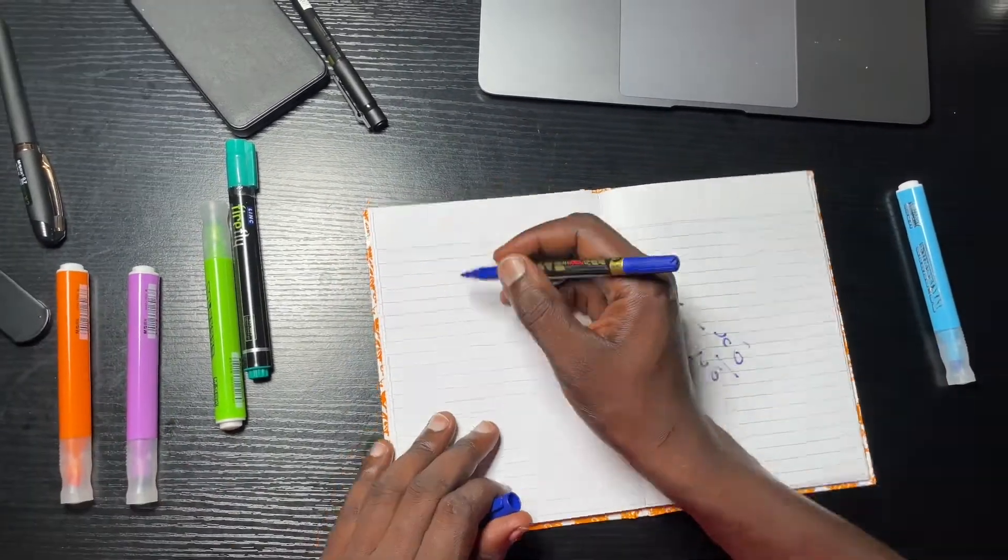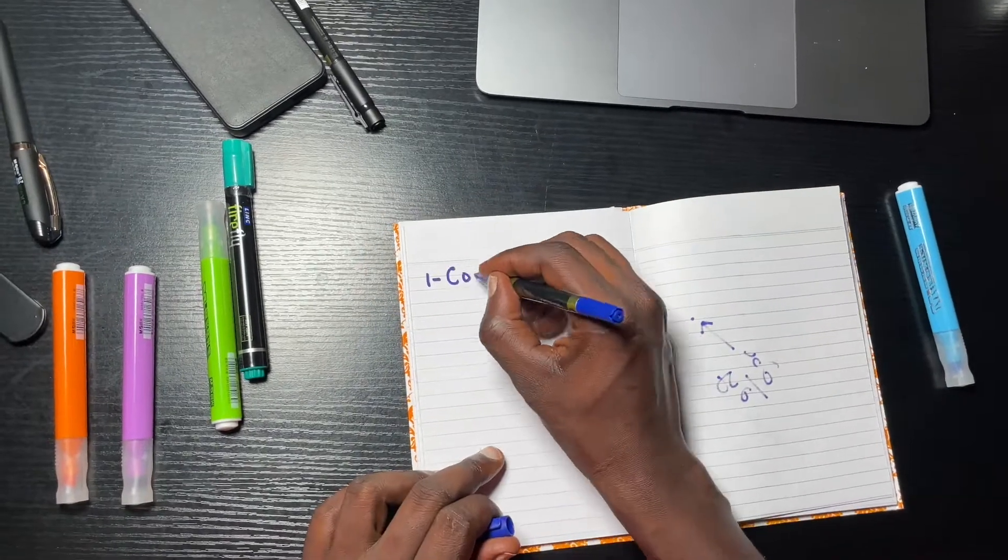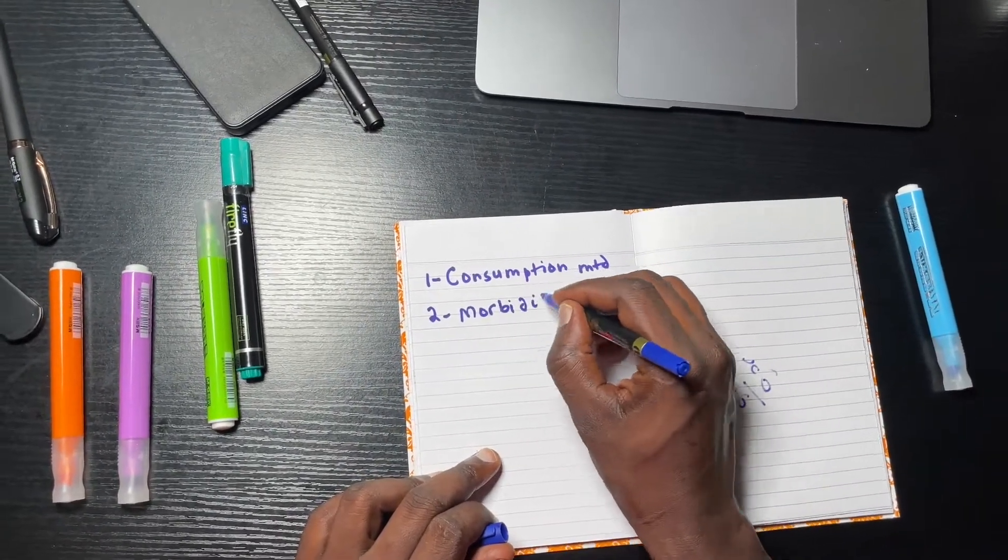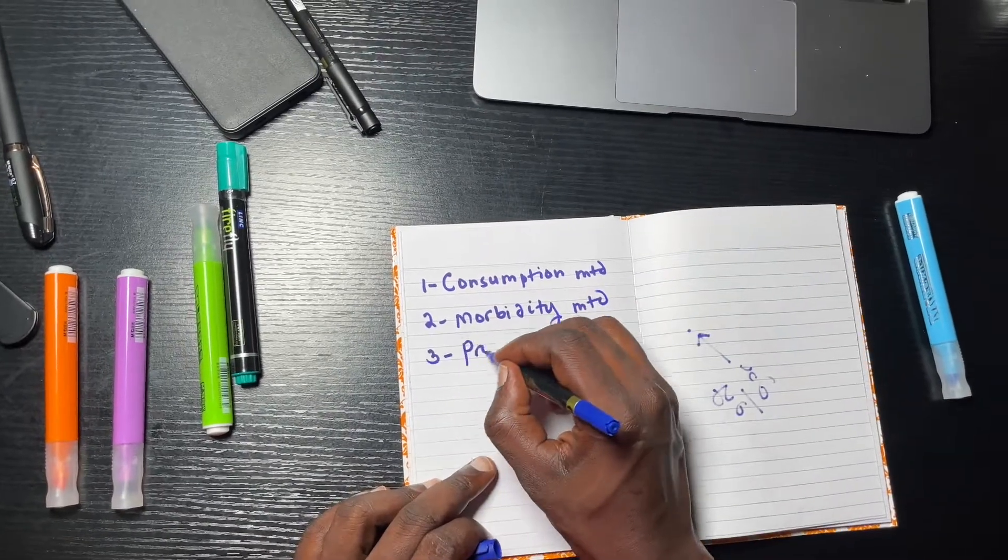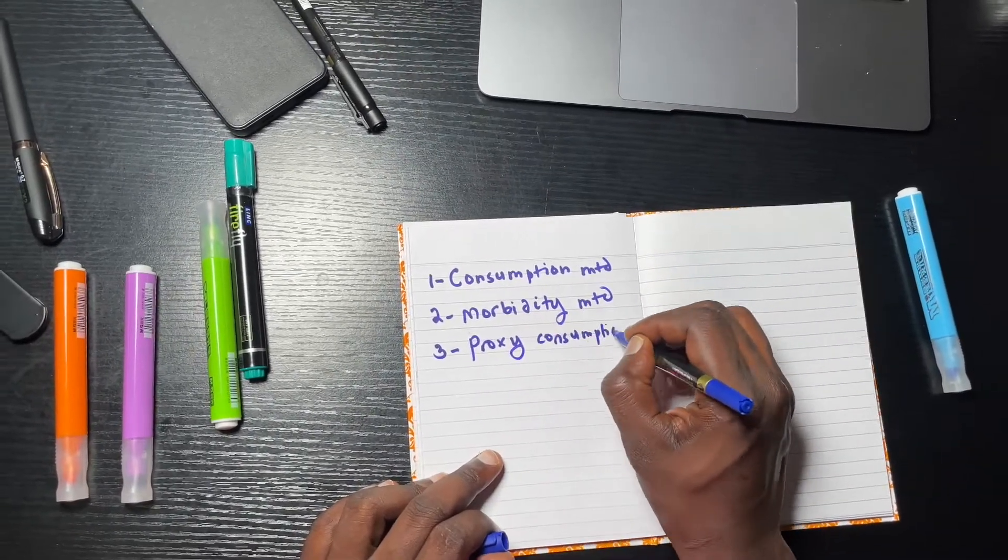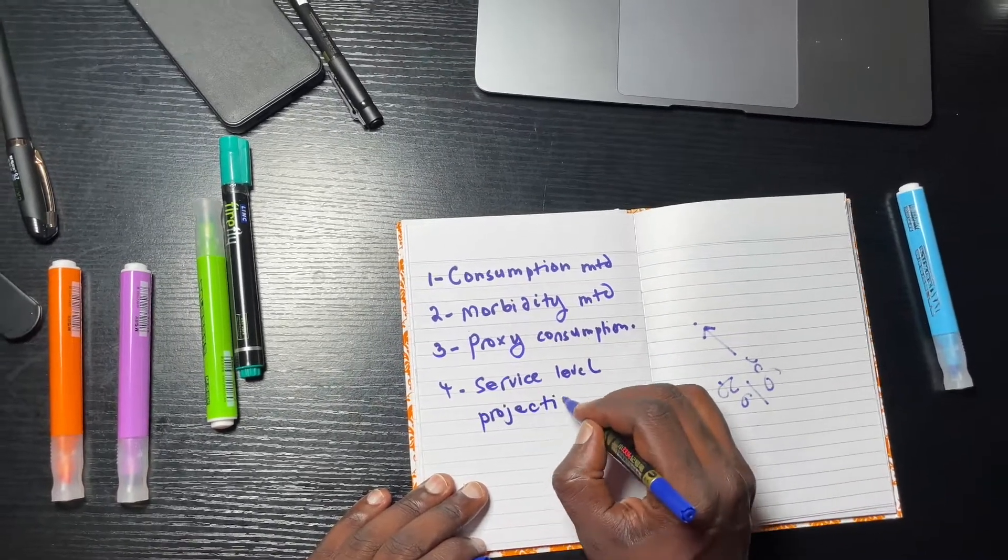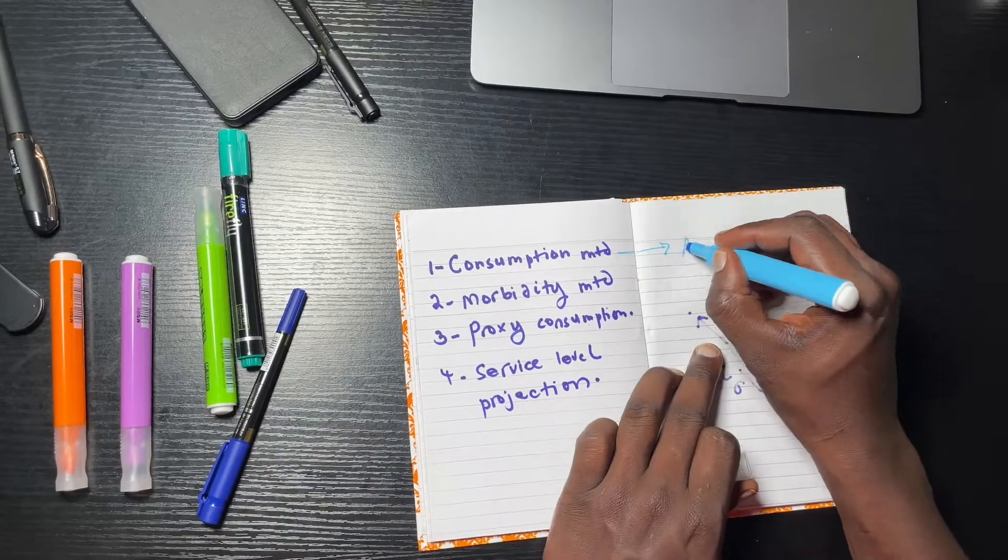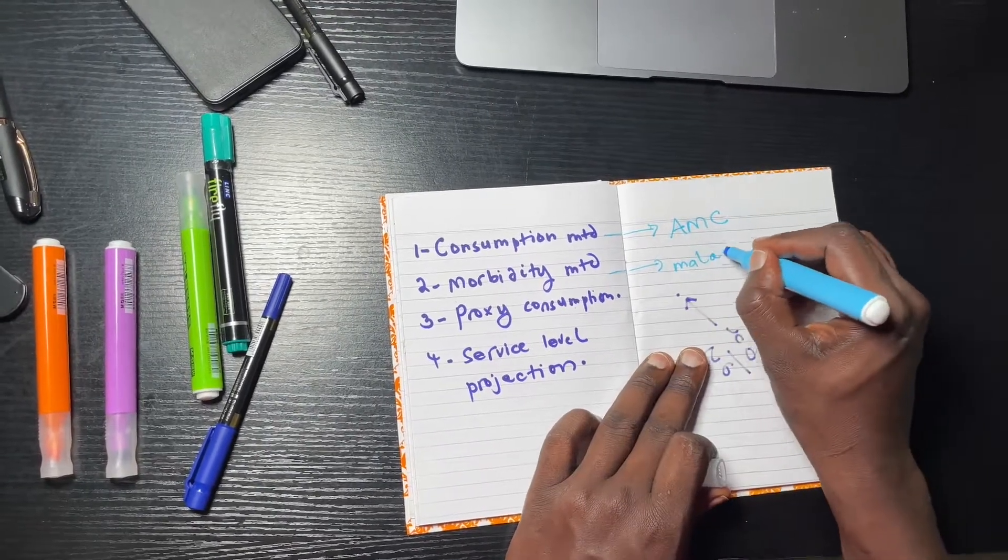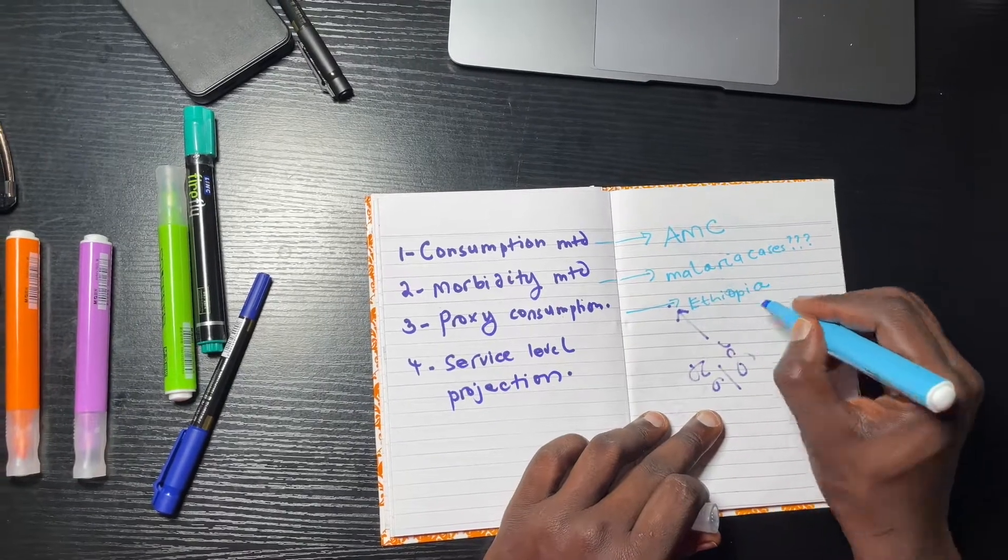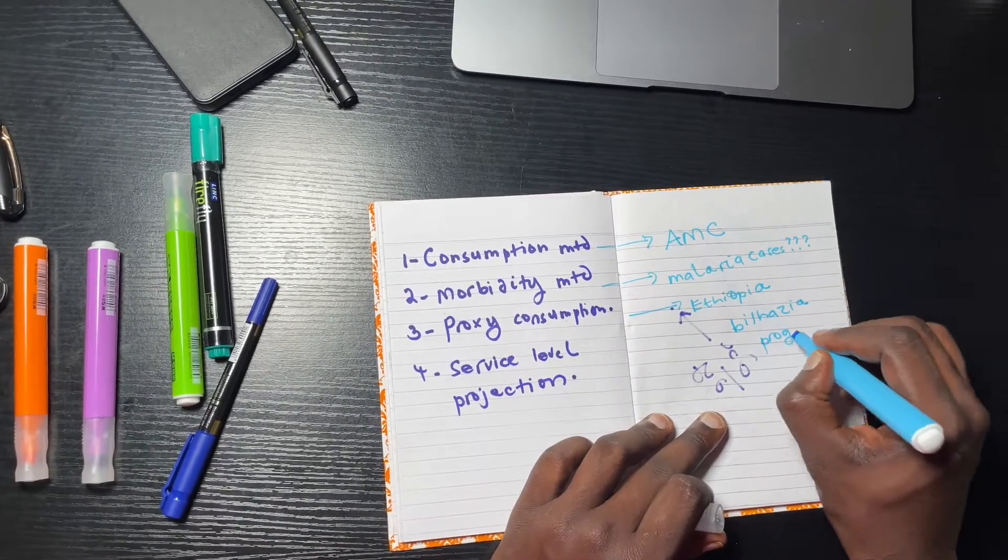The literature recognizes four methods of quantification and these include the consumption method, the morbidity method, proxy consumption technique and finally the service level projection of budget requirements. Types of data required for the methods are historical consumption, services data, comparison to standard systems and unit cost of service per patient.